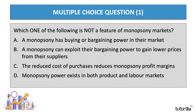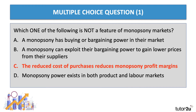Question one. Which one of the following is not a feature of monopsony? Please press the pause button. So which one is not a feature of monopsony? Well, we have four statements there and the correct answer is C — 'the reduced cost of purchases reduces profit margins.' In fact, the reverse is true. Monopsonists can use their bargaining power to bring down the cost of supply purchases, and that increases their profit margins. Good news for shareholders.